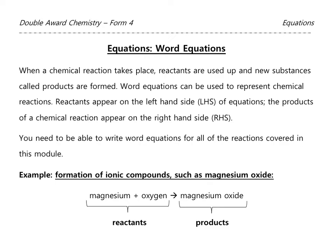The last thing we'll touch on briefly is word equations, on page 12 of your notes. When a chemical reaction takes place, reactants are used up and new substances called products are formed. We can use word equations to represent those chemical reactions. The reactants appear on the left-hand side of the equation and the products appear on the right-hand side, separated by plus signs and arrows.